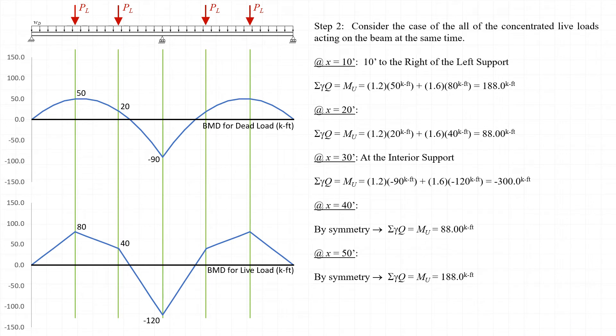Next, we will apply load combination number 2 at various locations of interest along the length of the beam that are indicated with the green lines. If we define the left end of the beam as x equals 0, then under the first point load, or at x equals 10 feet, we see that we have a factored moment Mu equal to 188 kip-feet.